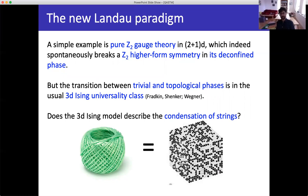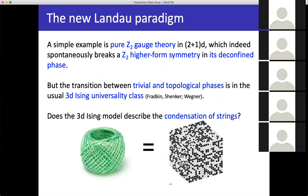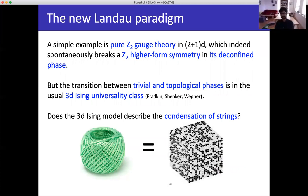Point two suggests there should be phase transitions describable by the condensation of strings in some sense. The simplest example is pure Z2 gauge theory in 2+1 dimensions, which spontaneously breaks a Z2 higher form symmetry in its deconfined phase. People have shown that the transition between trivial and topological phases is in the 3D Ising universality class. This suggests the 3D Ising model should be described by the condensation of strings.